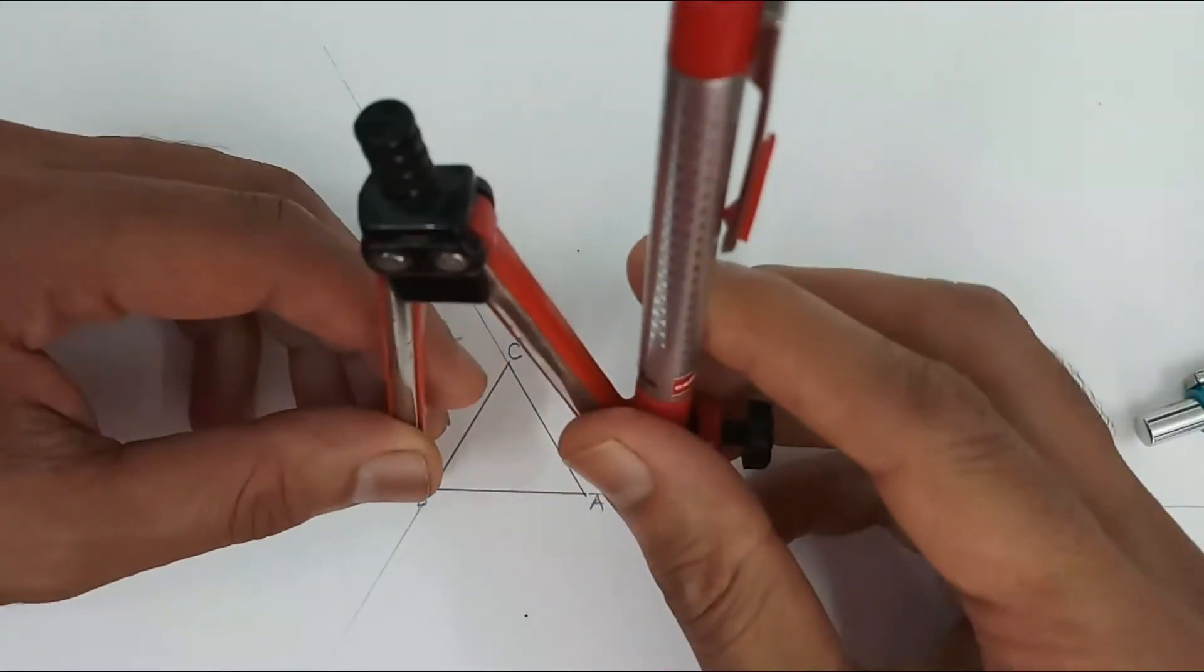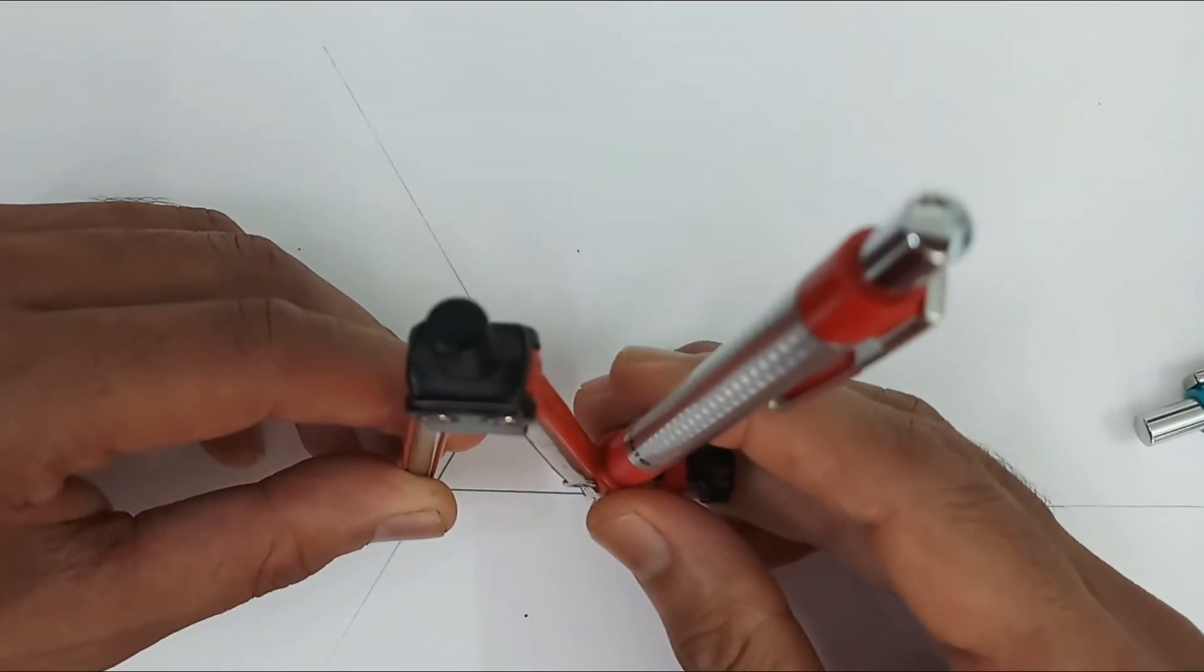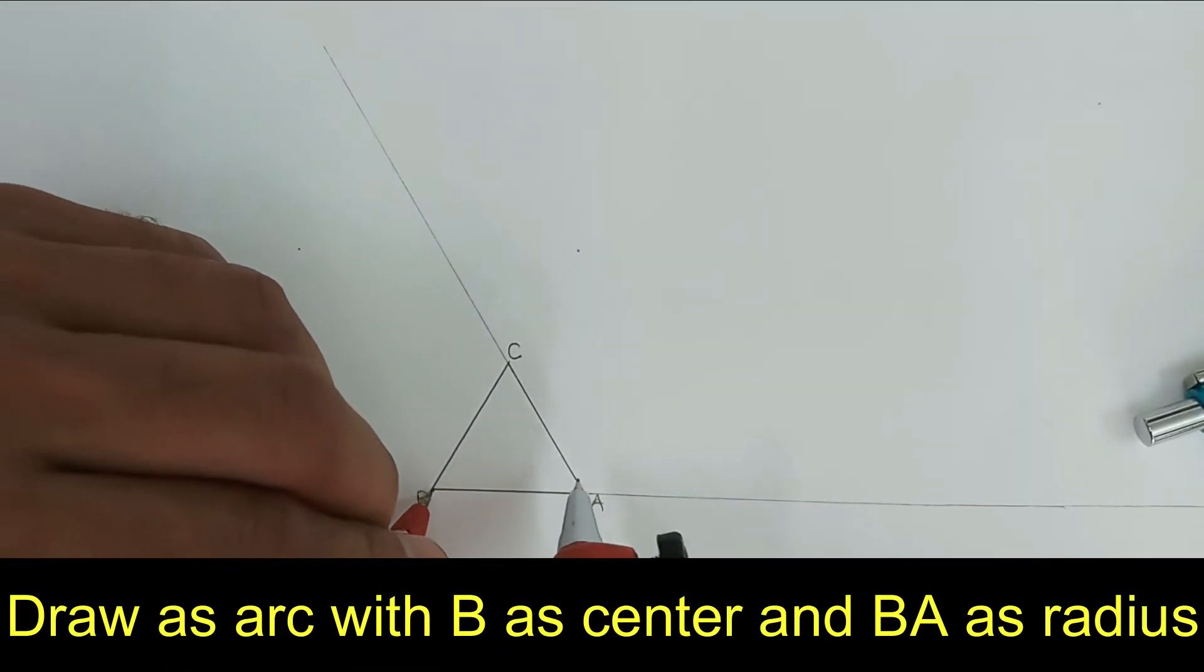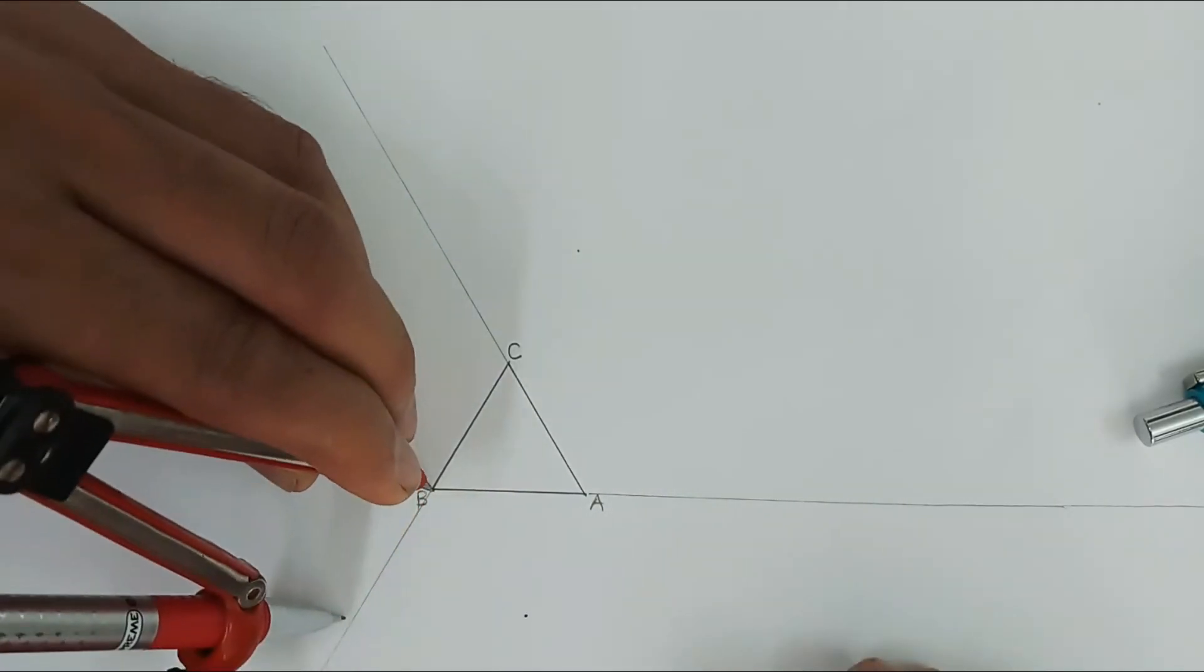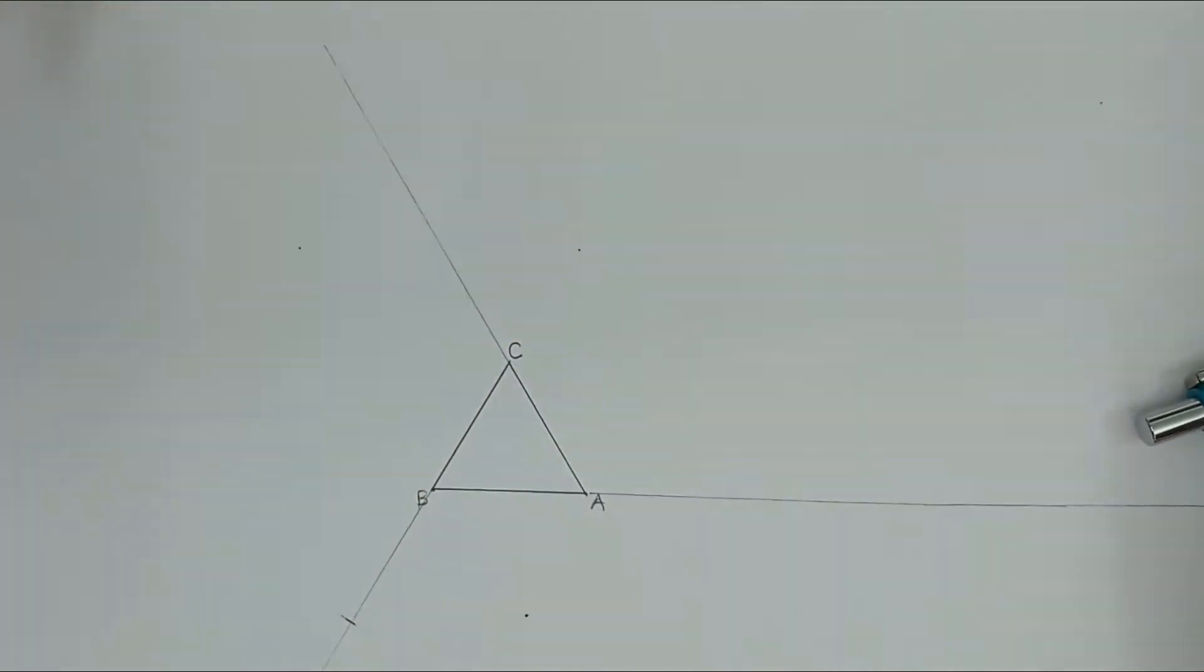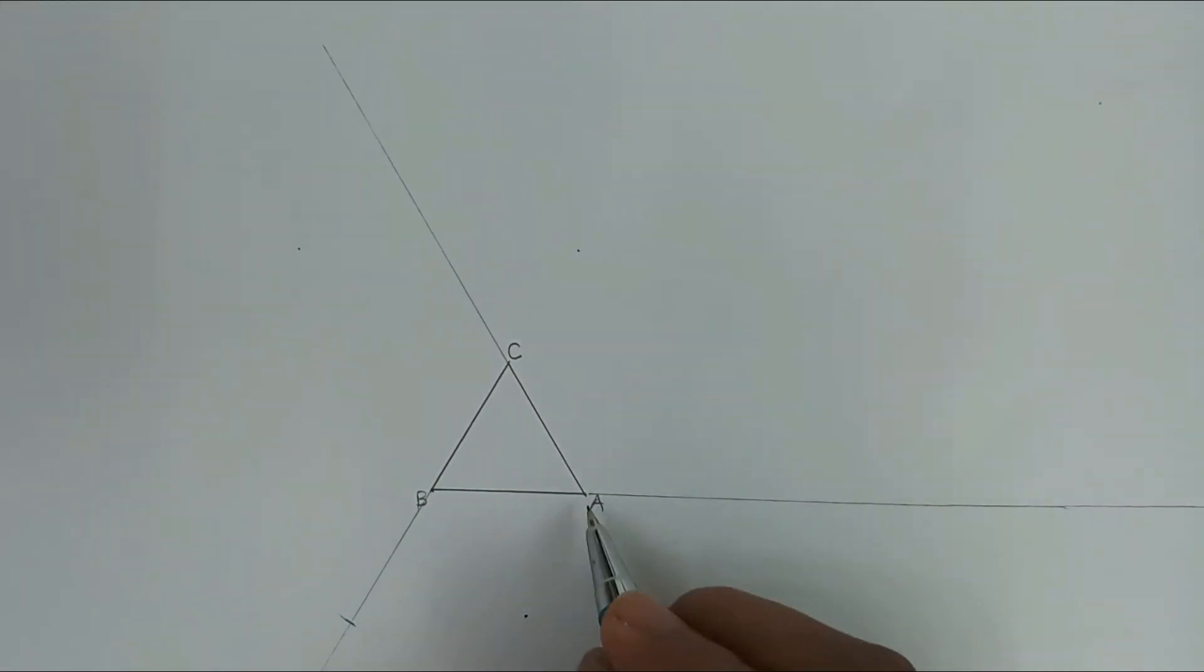As I go on unwinding the thread, initially it will rotate with B as center and BA as radius. So it will come to this particular location. So this is the first point as I start from this point, say this is the first point of the curve. So this is the second point.